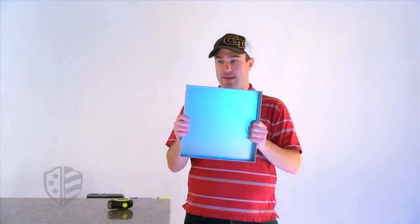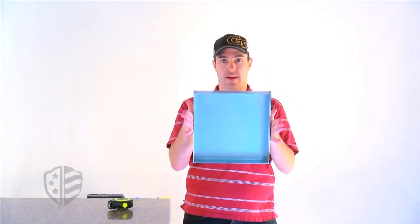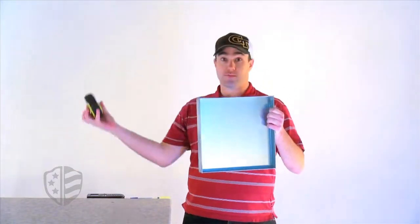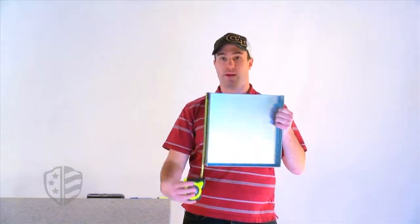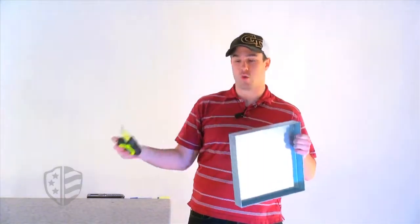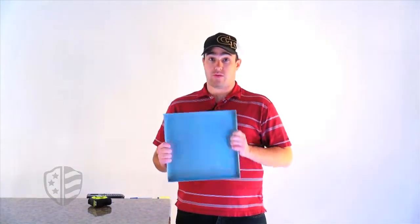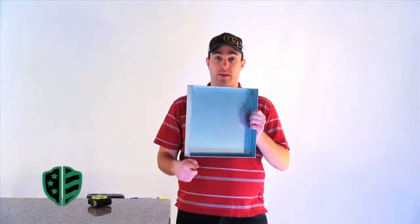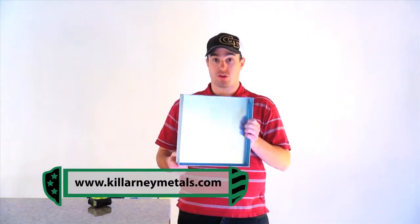Now why is that length instead of height? Because I'm holding it on its side. If I use my ruler here and measure it, it's 12 inches by 12 inches. 12 times 12 is 144. So we found that length times width was 144 square inches.